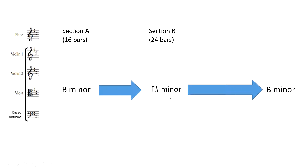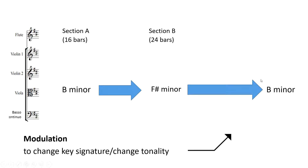This process of changing key is called modulation. We would say Bach starts Badinerie in B minor, he then modulates to F sharp minor at Section B, and towards the end of the piece he modulates back to B minor.